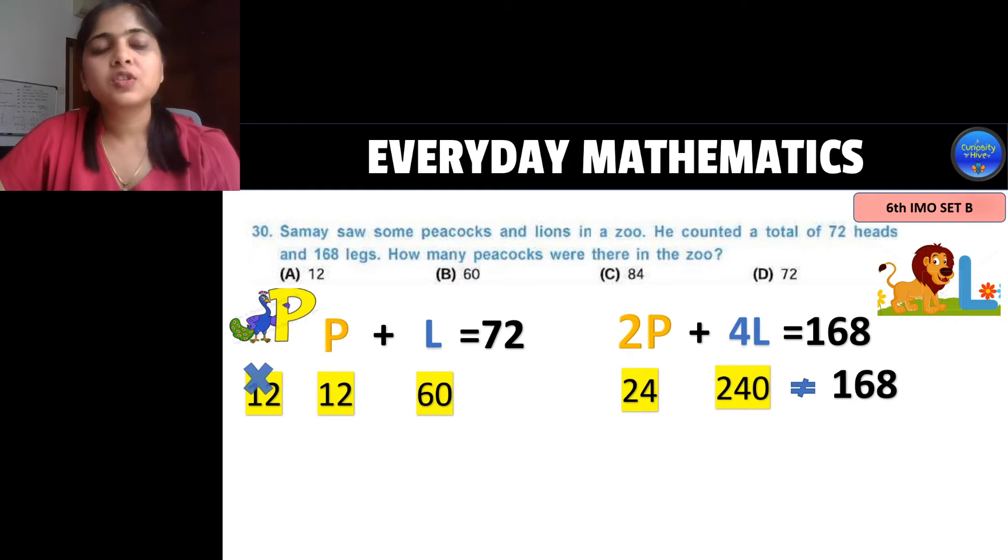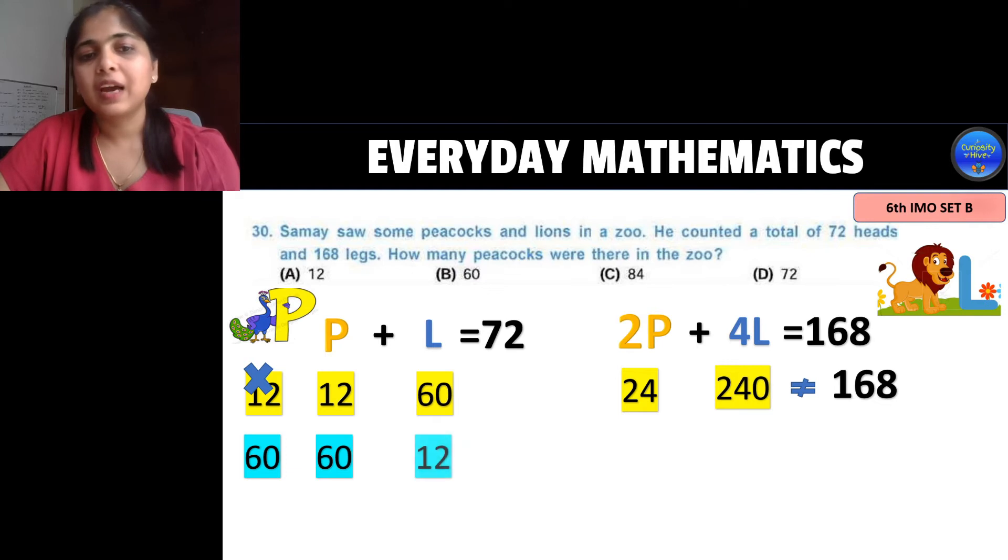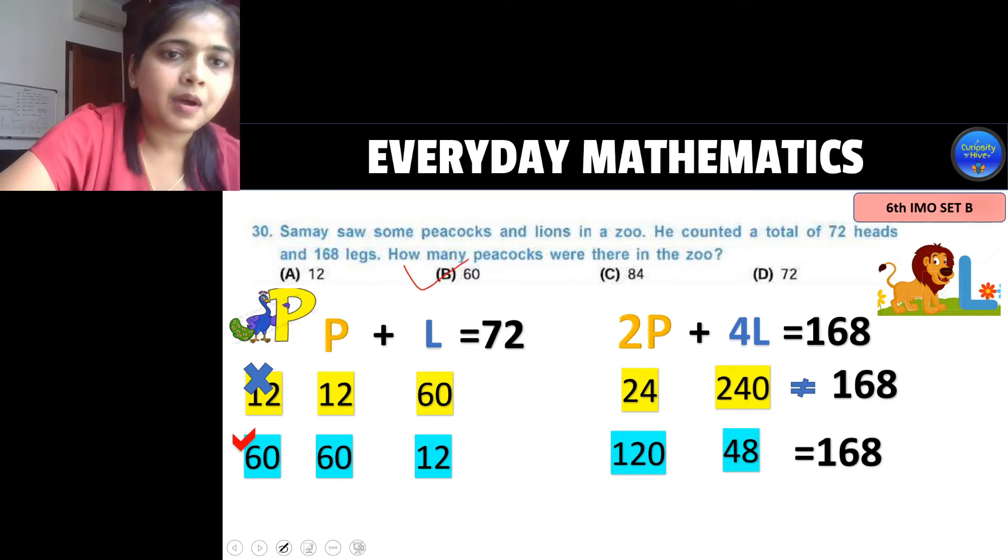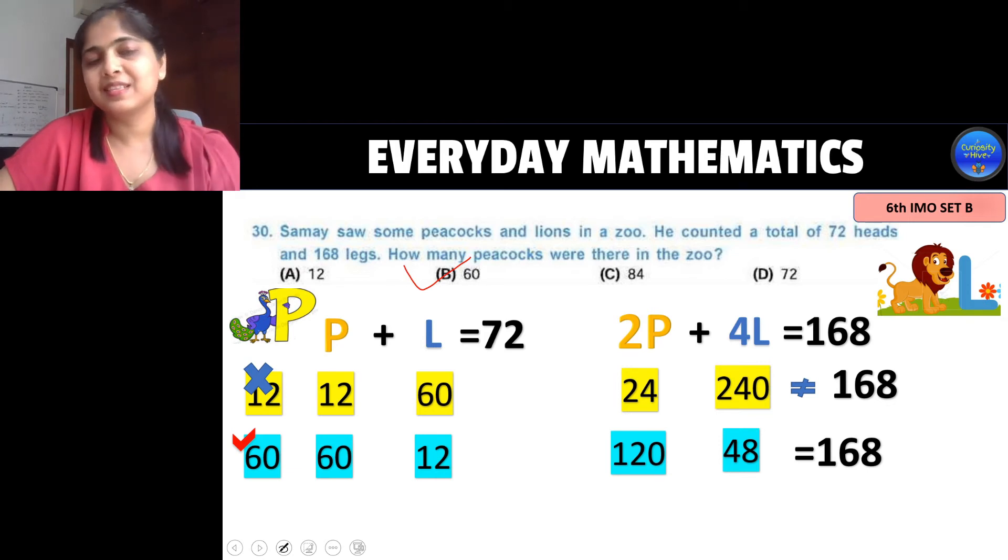So let's go to the next option which says that peacock is 60. So let's try to replace that. Now if peacock is 60 your lion will be 12 based on the equation p plus l is 72. Now let's replace this p plus l in this equation. So 2 times p is 2 times 60 which is 120. 4 times l is 4 times 12 which is 48, which equals 168 and the sum of these two is equal to 168 is the right answer. So we can mark b to be our right answer in this way also.